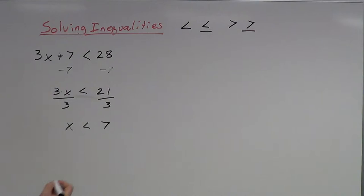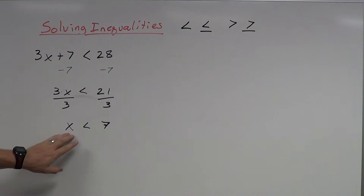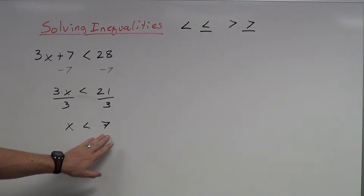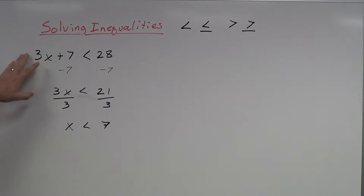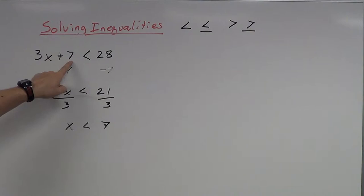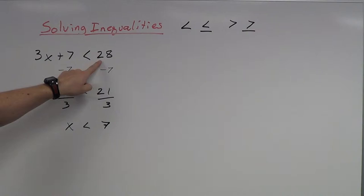x is less than 7, which means all of my solutions — all of the numbers that work — are going to be smaller than 7. If I want to check that, what's a number smaller than 7? Well, 6. So if I plug in 6: 3 times 6 is 18, 18 plus 7 is 25. 25 is smaller than 28 — that does work.